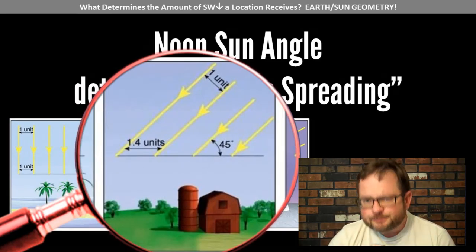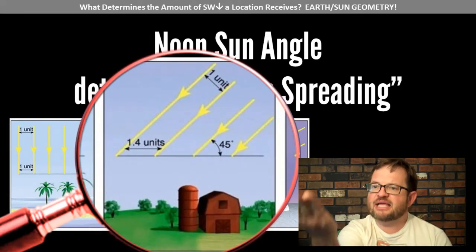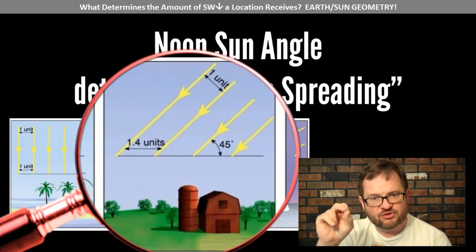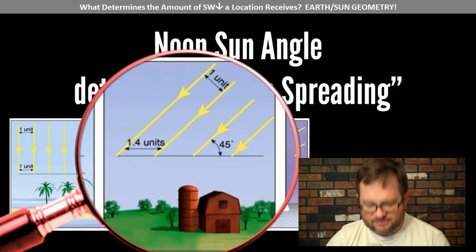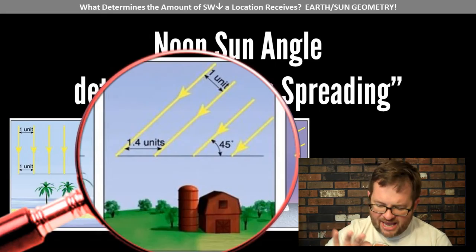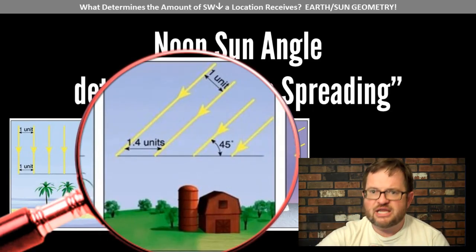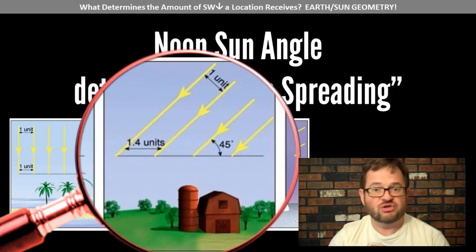Moving to the next location — a barn representing the mid-latitudes, maybe the latitude of Omaha — on this particular day the noon sun angle is 45 degrees, the highest the sun is going to get. Those rays from the sun are still one unit wide, but when they hit the ground because they're hitting at an angle, it actually spreads out into an area 1.4 units wide. It takes trigonometry to prove why it's that particular size, but the same amount of rays — a beam one unit wide — has to spread out over a larger area of the ground. The same amount of heat and shortwave radiation from the sun is spreading over a larger area, and it just can't heat that area up as much.